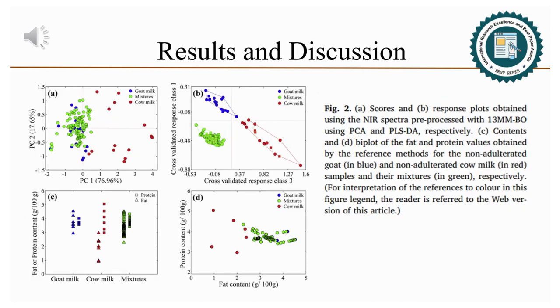Since cow milk can represent economic losses and health risks to allergic consumers, it would be extremely helpful to develop a simple and rapid tool that can identify goat milk adulteration with cow milk regardless of its content. Thus, a non-target analysis employing the NIR spectra as a fingerprint of the samples was performed in order to differentiate non-adulterated goat and cow milk samples as well as adulterated goat milk samples.